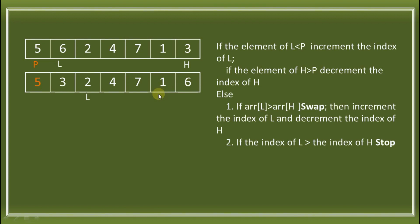Now check if L index is greater than H index: index 2 greater than index 5 is false, so we don't stop yet — we go back to the top. Check again if element of L is less than P: 2 less than 5 is true, so increment index of L. Check again: 4 less than 5 is true, so increment again. L moves again. Check again: 7 less than 5 is false. Then check if element of H is greater than P: 1 greater than 5 is false.